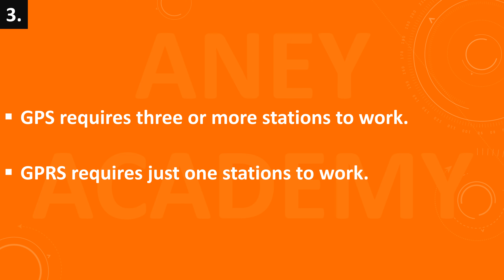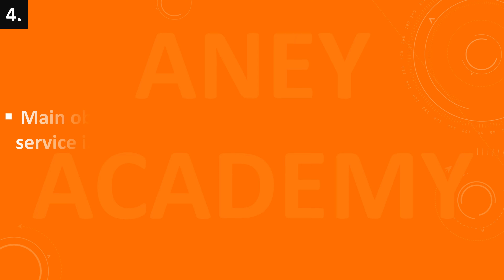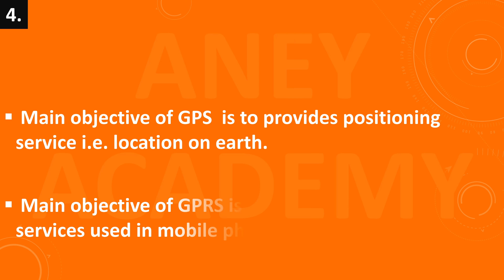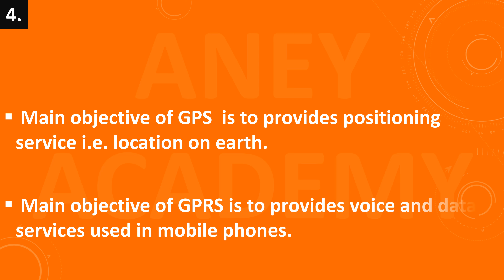GPRS ko kam karne ke liye sirf ek hi station ki avashyaktah hoti hai. Main objective of GPS is to provide positioning service, that is location on earth. GPS ka main objective positioning service, yaani dharti par location ko provide karana hota hai.